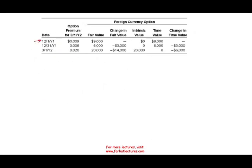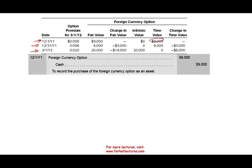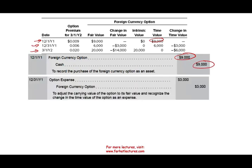Here's the data we are given for December 1st, December 31st, and March 1st, along with the option premium paid and the value of the option. On December 1st, we record a foreign currency option asset — the hedging instrument — and we credit cash because we paid $9,000 for the transaction.